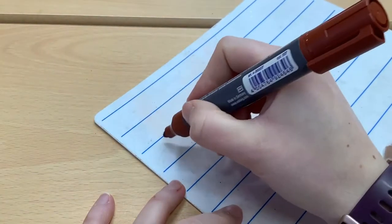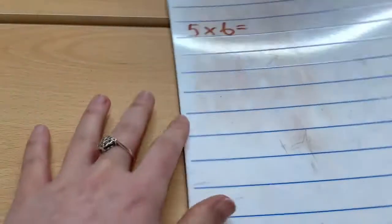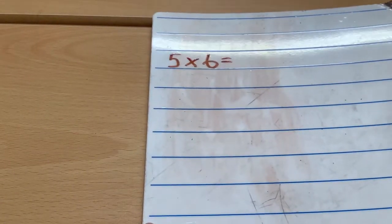The next step would be to draw your array yourself. So for example, if you started with 5 multiplied by 6 equals, you would draw 5 six times.